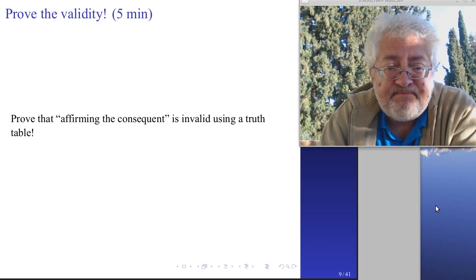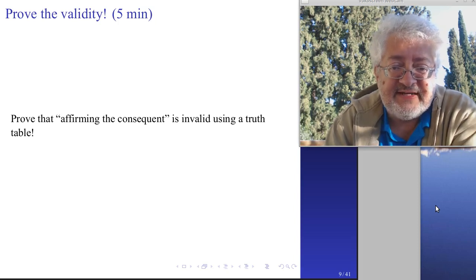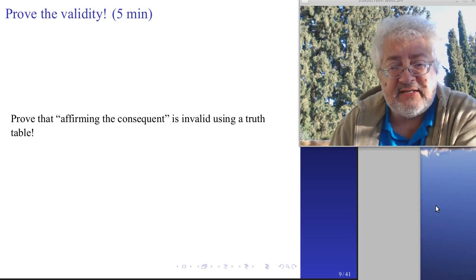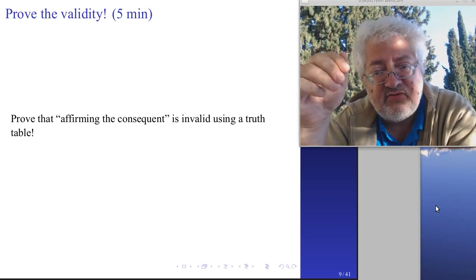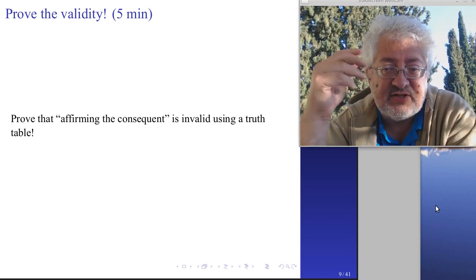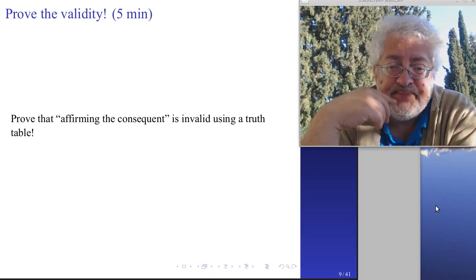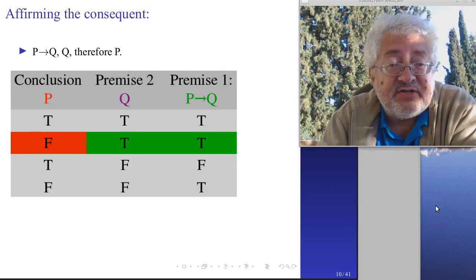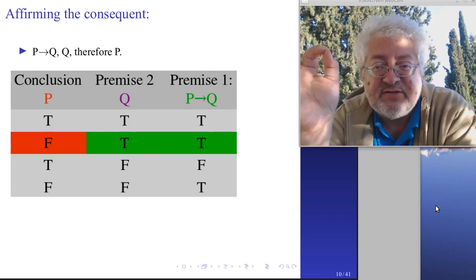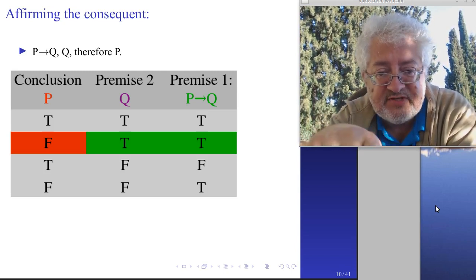Now let's prove that affirming the consequent is invalid using a truth table. Affirming the consequent is: p implies q, second premise q, conclusion p. It's still an implication truth table but the assignment of premises and conclusion is different. You still have the same truth table p, q, p implies q - it looks exactly the same as the previous example, but the premises and conclusion have changed.